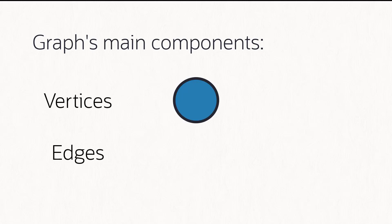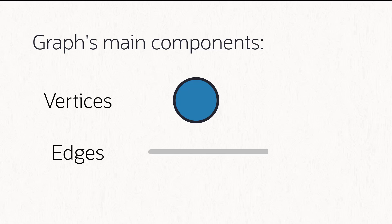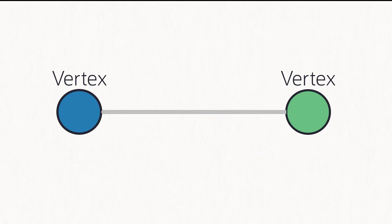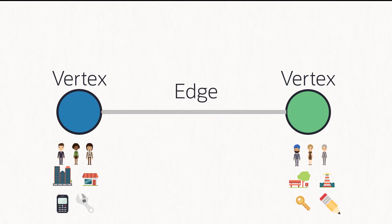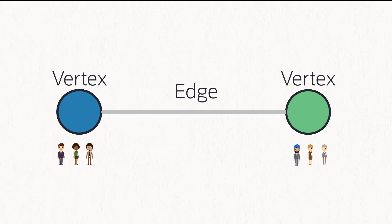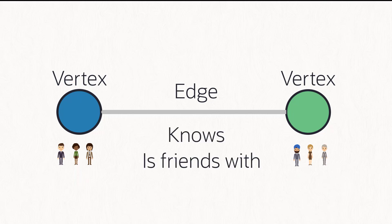We'll use circles to represent vertices and lines to represent edges. Vertices can also be called nodes and are normally nouns or entities like people, places, and things. Edges are what connect nodes or represent relationships between them. For example, a person can know someone, be friends with someone, or work with someone — or all of them at the same time.